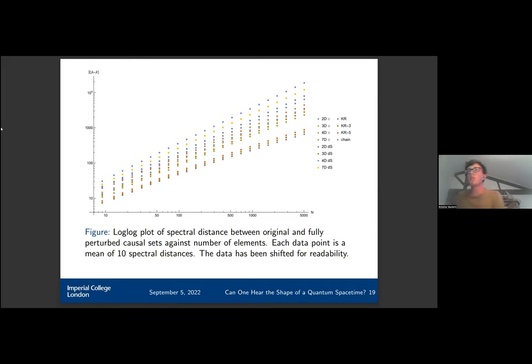What we did was we generated causal sets in different dimensions as well as curvatures, and also different K orders. So K orders with one layer and then we've added layers, so three and five layers.